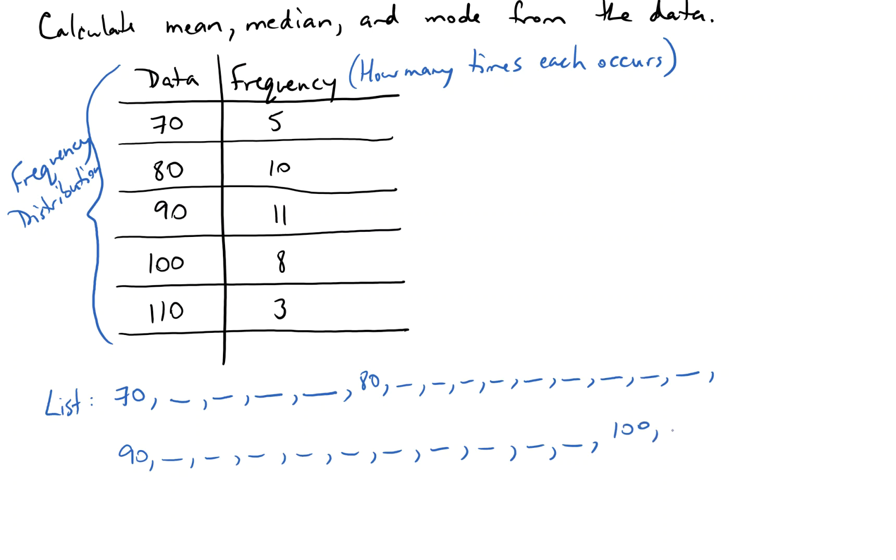I'd have eight 100s. Then I'd have three 110s, which I could certainly list out. So that would be our list of data in order.